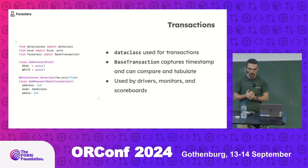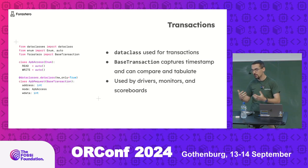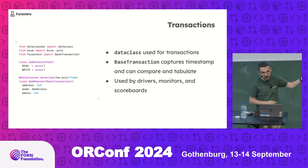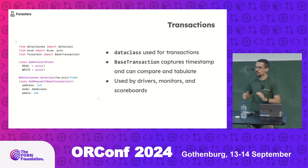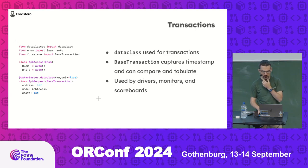We use data classes very heavily. We have a custom base class for data classes which attaches the simulation cycle at which it was sampled. Other than that they're just data classes, used uniformly in drivers, monitors, and scoreboards. They're really powerful — you can do things like, if you weren't interested in the 'mode' field in comparisons, put an exclusion in the data class saying never compare this field and it will silently ignore it. That can be dangerous, but if you're using it to attach extra metadata your simulation needs to look at but you don't care about in your scoreboard, it's quite powerful.